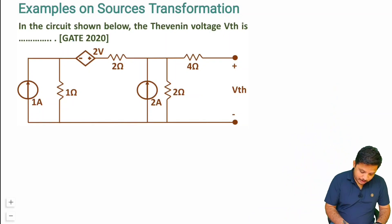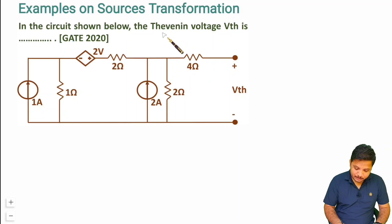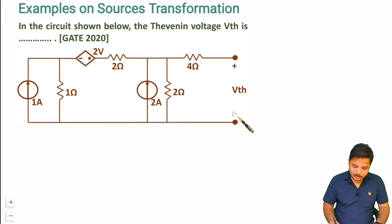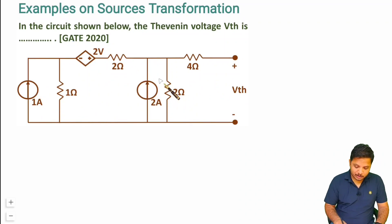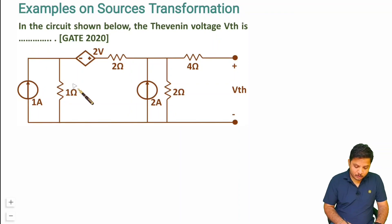In this circuit we are required to find Thevenin's voltage Vth, which is happening here with plus-minus polarity. Now if you solve this question for Vth by mesh analysis or nodal analysis, it will consume too much time as there are three voltage sources and four resistors connected in this circuit. So the easier way is to apply source transformation.